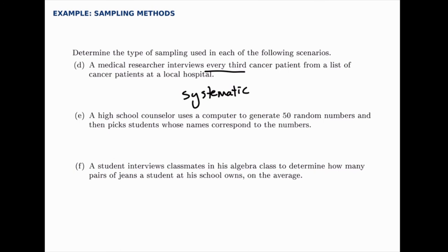The next one, a high school counselor uses a computer to generate 50 random numbers and then pick students whose names correspond to the numbers. Notice how there's no division into groups.